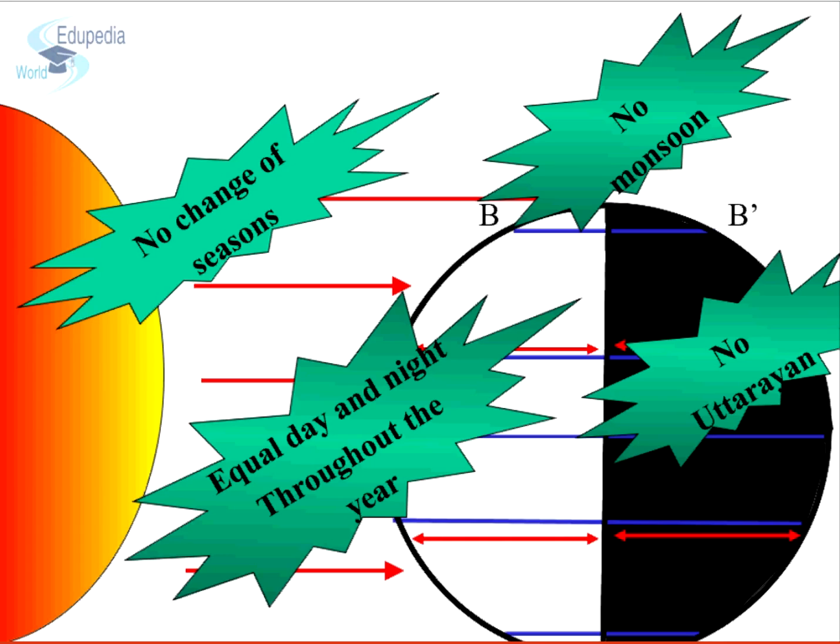Moreover, the concept of apparent migration of sun would not have occurred and sun would have not moved in the sky north or south during the year. We would not have had any Uttarayan or Dakshinayan, that is the northward and the southward migration of sun in the sky.